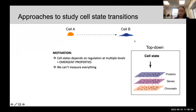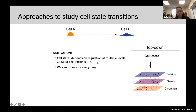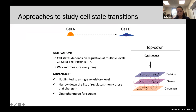What I'm proposing is to take a top-down approach, in which we start by looking at cell states before trying to identify how they're regulated. The motivation is that cell states — what makes a progenitor different from a differentiated cell — are regulated at multiple levels; they are effectively emerging properties. A second motivation is that currently we cannot measure everything. But this approach has key advantages: we're not limited to a single regulatory level.